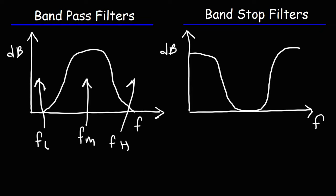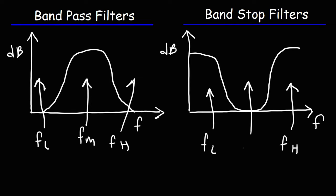The bandstop filter is the reverse. The low-level frequencies and the high-level frequencies are allowed to pass through the circuit, but the mid-level frequencies within this band are filtered out.